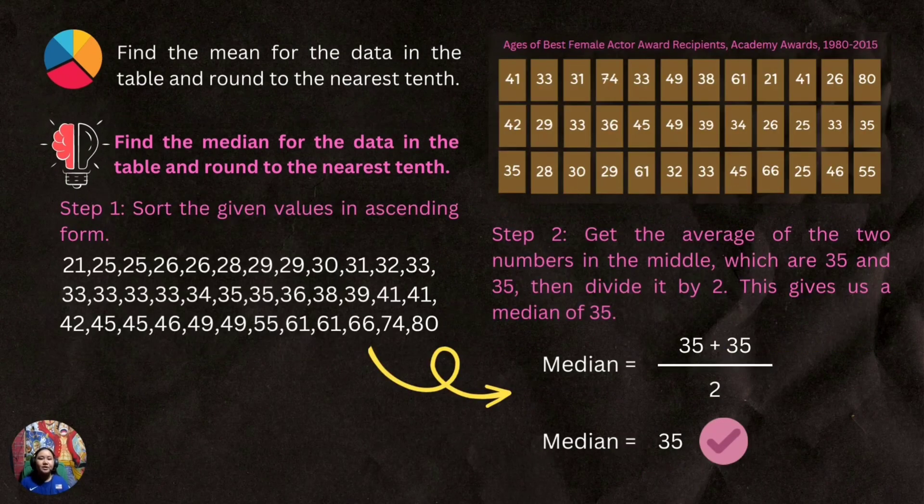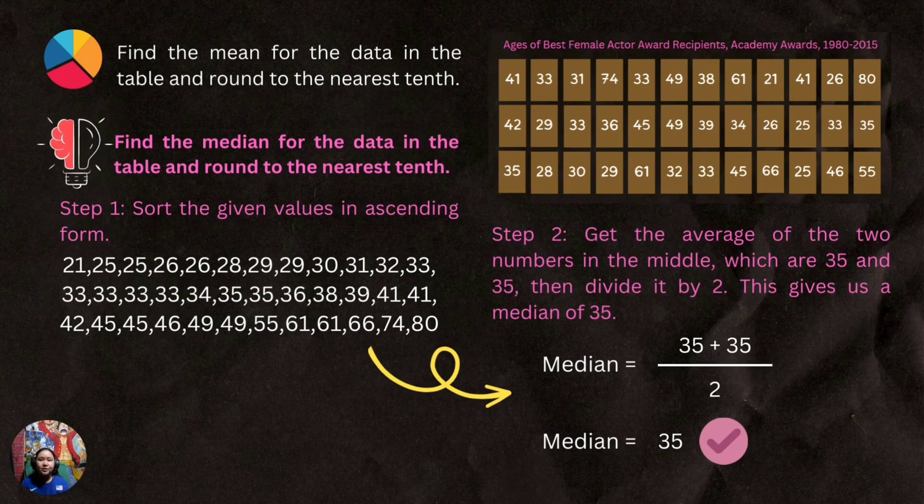To find the median, all we have to do is two simple steps as well. Step 1: sort the given values in ascending form. Step 2: get the average of two numbers in the middle, which are 35 and 35. Then we will divide it by 2 and this will give us a median of 35.